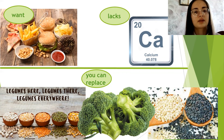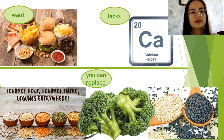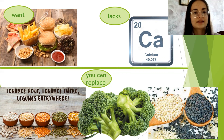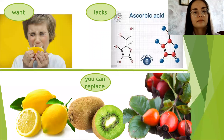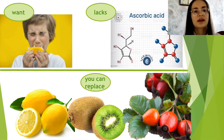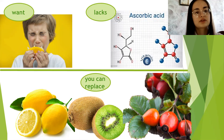Calcium can be obtained from dairy products, legumes, sesame, and broccoli. If you are drawn to sour foods, this indicates a lack of ascorbic acid — vitamin C. You can get it from lemons, kiwi, berries, and rosehip.